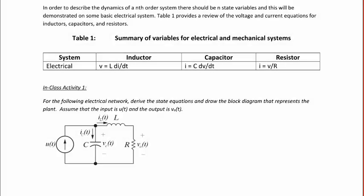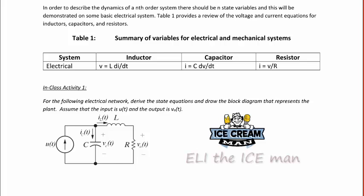In order to describe the dynamics of an nth order system, there should be n state variables, and this will be demonstrated on some basic electrical systems. Table 1 provides a review of the voltage and current equations for passive circuit elements: inductors, capacitors, and resistors. Recall that the voltage for an inductor is v = L di/dt. The current for a capacitor is i = C dv/dt. And the current for a resistor is i = v/R.